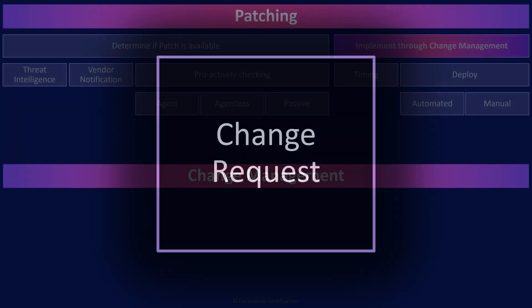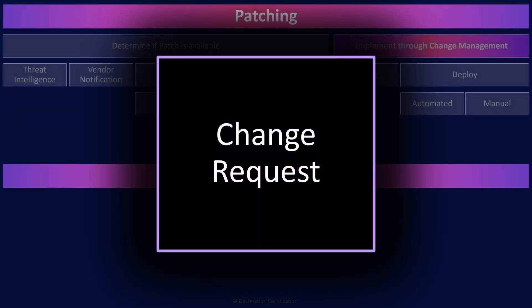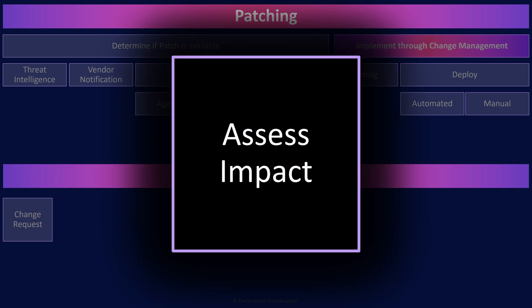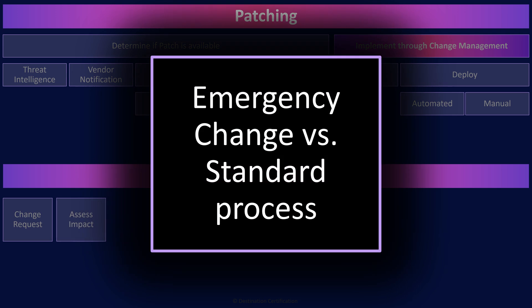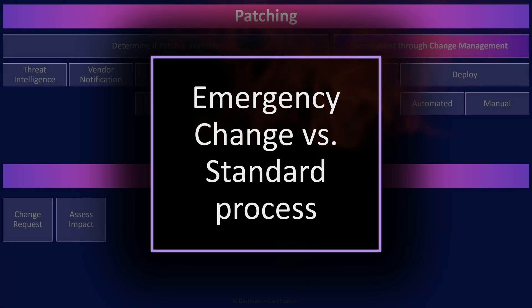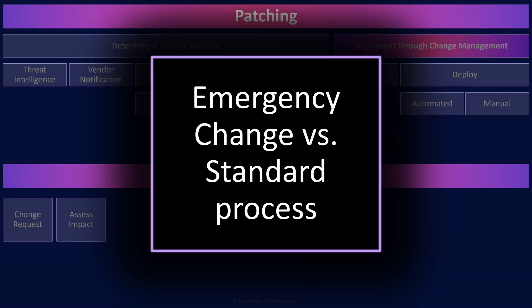The change management process begins with a change request, which can come from practically anywhere: a system owner wanting new functionality, a customer identifying a bug, the results of a root cause analysis from an incident, or even through threat intelligence indicating a need to patch a system. For every change request that comes in, an impact assessment must be performed. Is this a minor change requiring little effort with zero impact on customers? Or is it a massive change requiring hundreds of hours of development, millions of dollars, with significant impact on multiple stakeholders if something goes wrong? Or is this a high-priority patch that needs to be treated as an emergency change? The impact assessment drives the rest of the change management process.